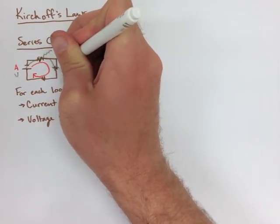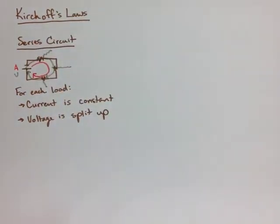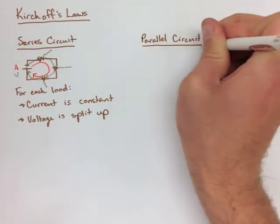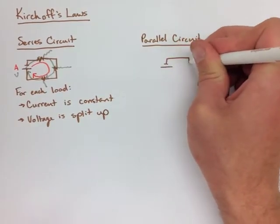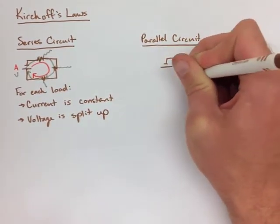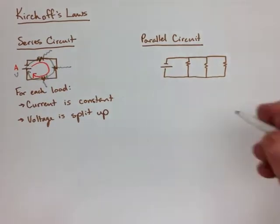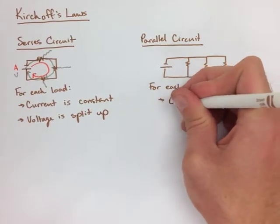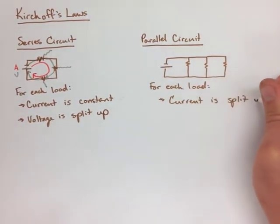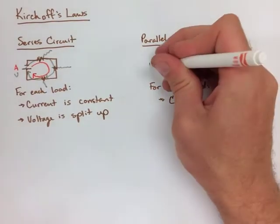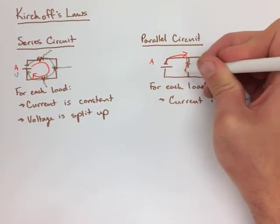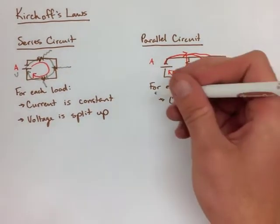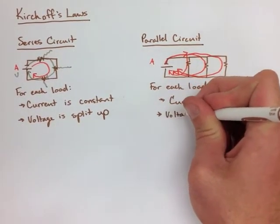Now, in a parallel circuit, he discovered that there were a few things that were a little bit different. What he actually found was that for each load, the current is now split up. Those people walking around the circuit, they have three different paths they can take, so they split up amongst each of the resistors. But the voltage in a parallel circuit is the same, because no matter what resistor I go through, I have to spend all of that money that I got at the battery, so really the voltage has to be the same at each resistance in a parallel circuit.